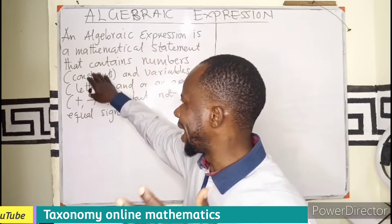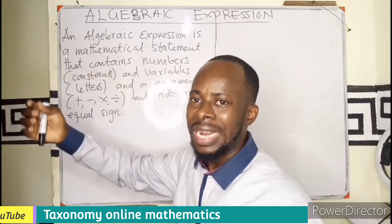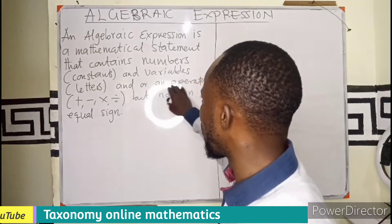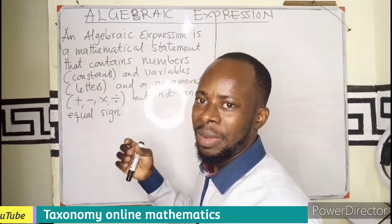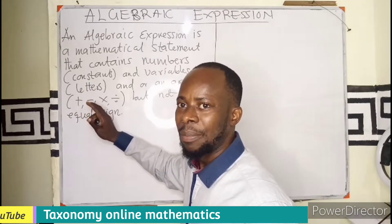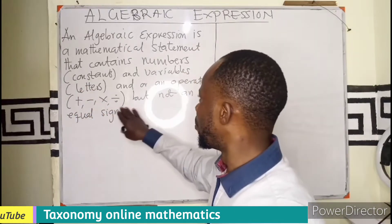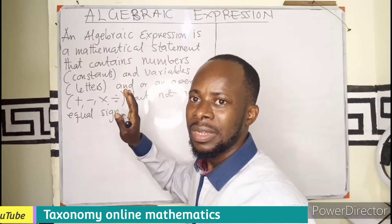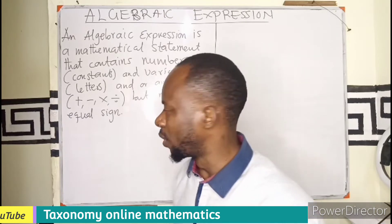So if I combine letters of the alphabet with that of constants — that is, numbers — then separated by an operator, mathematical operators, which are addition, subtraction, multiplication and division, but not an equal sign, that statement is an algebraic expression.